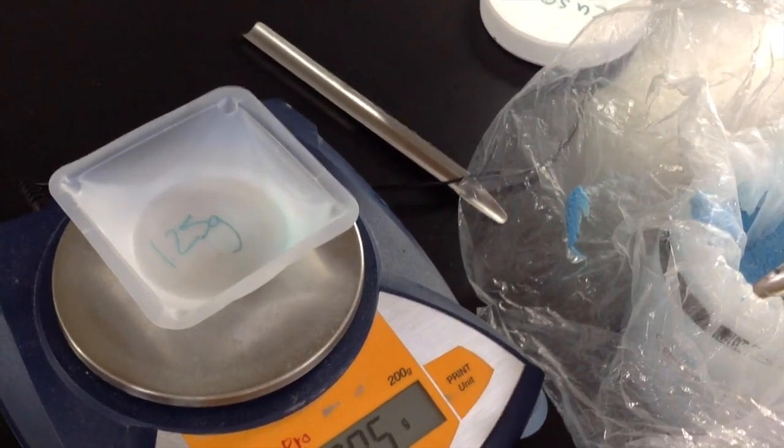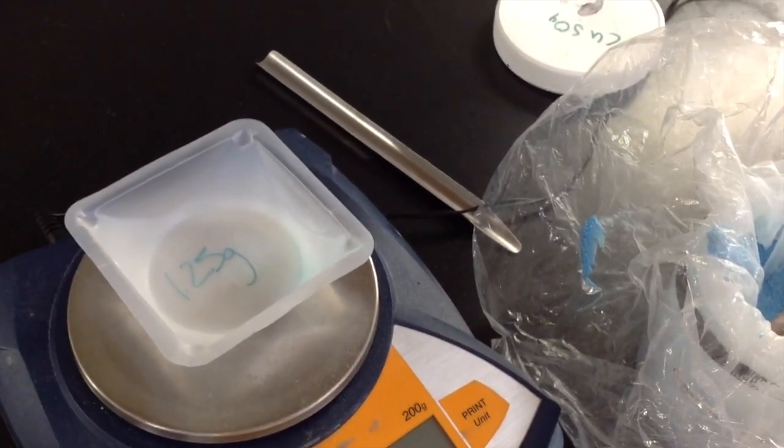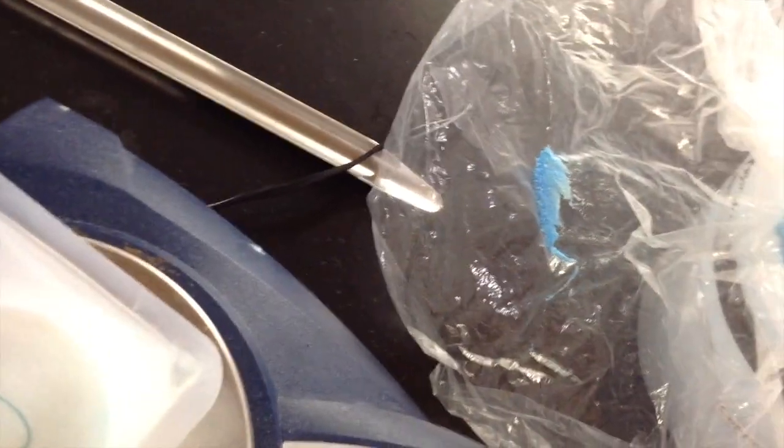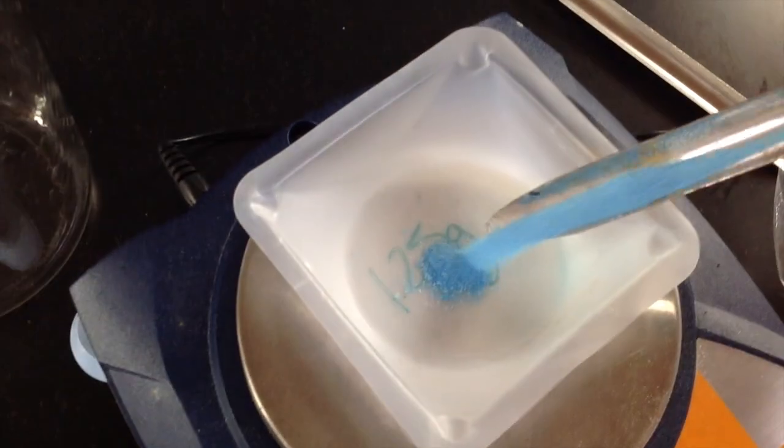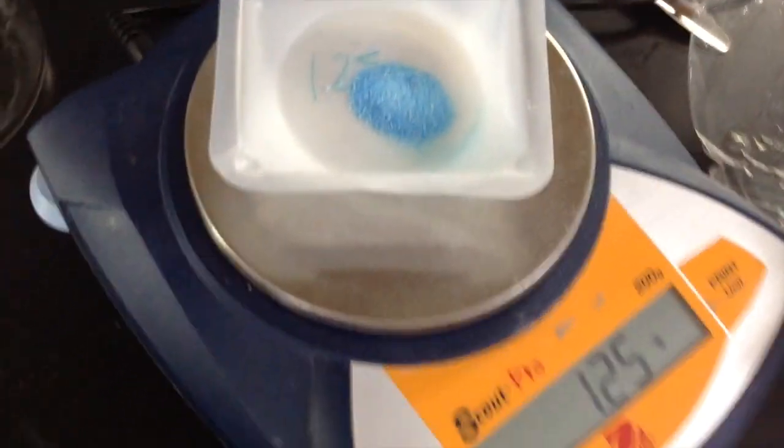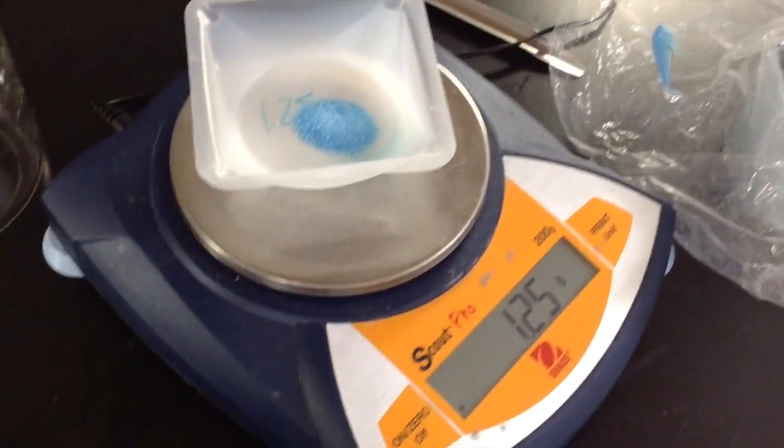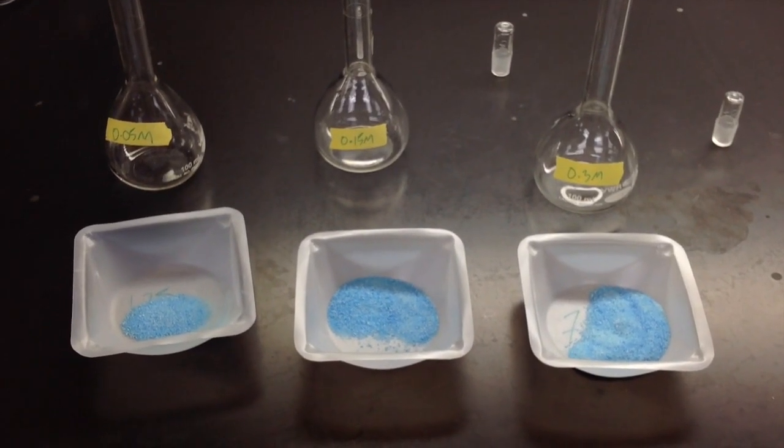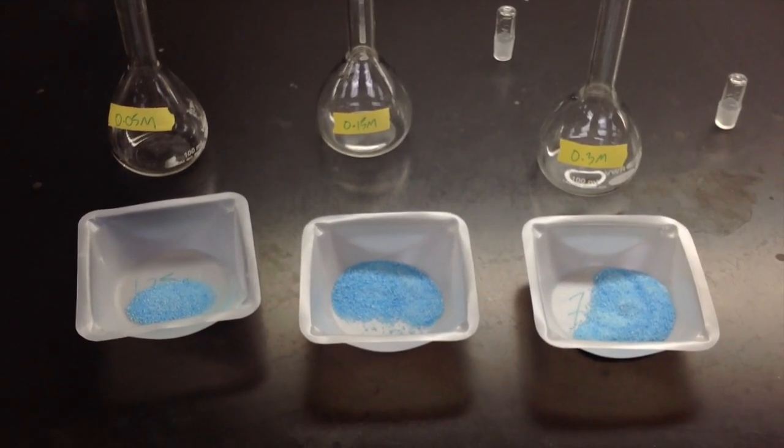So to actually prepare the solutions, we need to grab our balance and weigh boat and we need to get 1.25 grams. So grab a scoop here of the reagent and add it to the boat. Hey, look at that. And I'll go ahead and prepare the others up here really fast. And once we do that, I'll show you how to make the solutions.